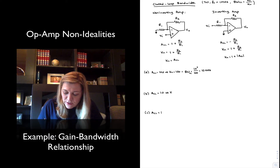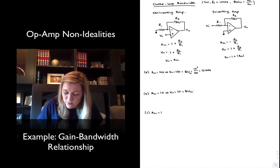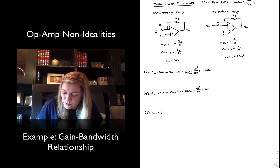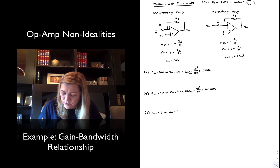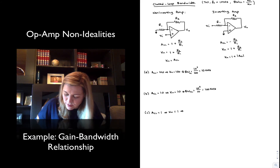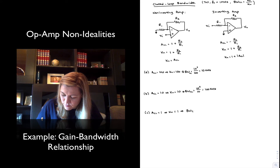In the second scenario with a signal gain of 10, the noise gain is also 10, so the closed-loop bandwidth is 10 to the 6 divided by 10, giving 100 kHz — ten times larger. Finally, for a closed-loop gain of 1, the noise gain is also 1, and the closed-loop bandwidth is 10 to the 6 divided by 1, which is 1 MHz.